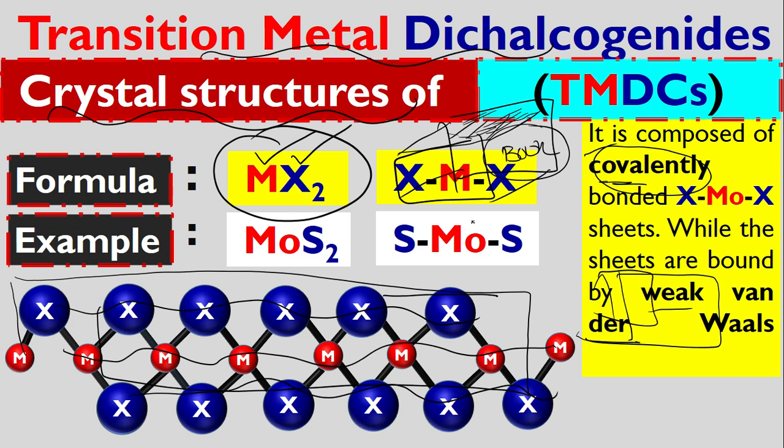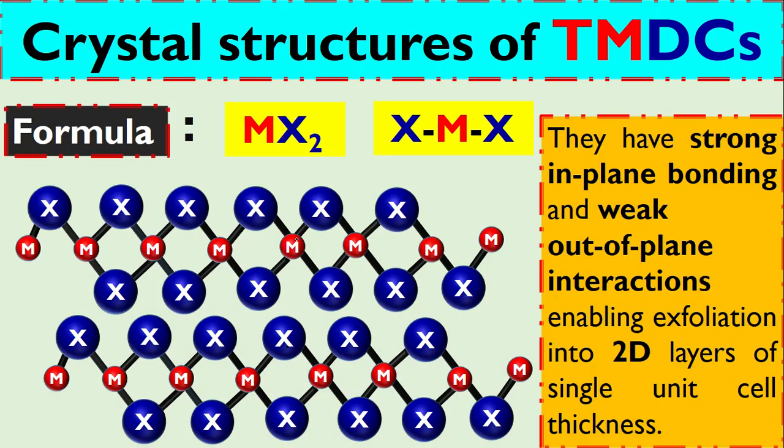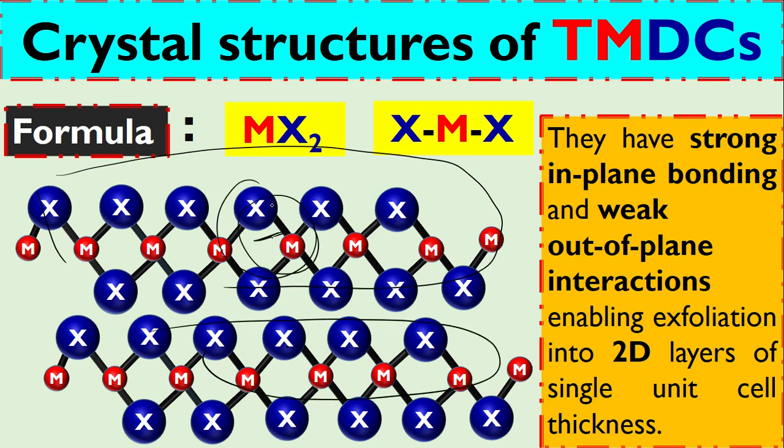This is why we can easily make two-dimensional sheets from three-dimensional material. This is one two-dimensional sheet, this is another two-dimensional sheet. Between the atoms here, this is covalent bond with strong in-plane bonding, but between these two sheets this is called weak out-of-plane interaction—van der Waals forces. This is why it is very easy to use exfoliation.